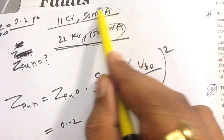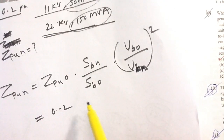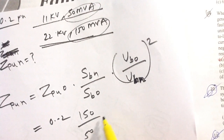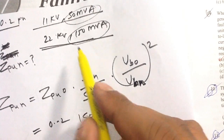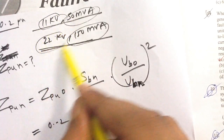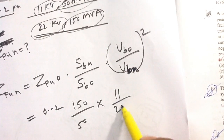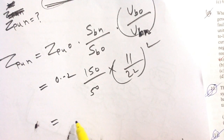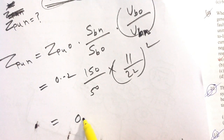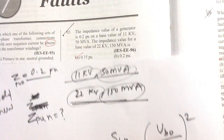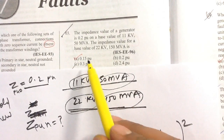Old per unit impedance is 0.2. New power is 150, old power is 50, so 150 by 50. Old base voltage is 11 kV and new base voltage is 22 kV, so 11 by 22. Solving this gives 0.15 per unit. So option A is correct.